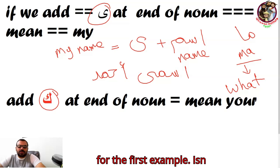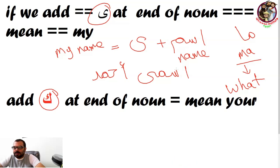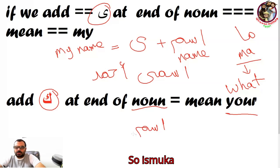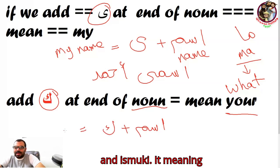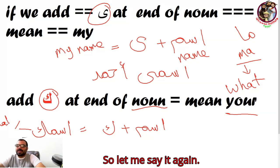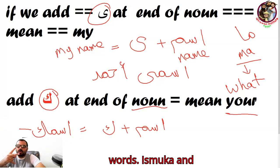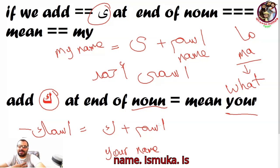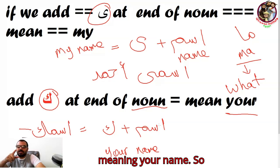Let's apply it. 'Ism' plus 'kaf' becomes 'ismuk' — your name. So now we have learned two words: 'ismi,' meaning my name, and 'ismuk,' meaning your name.